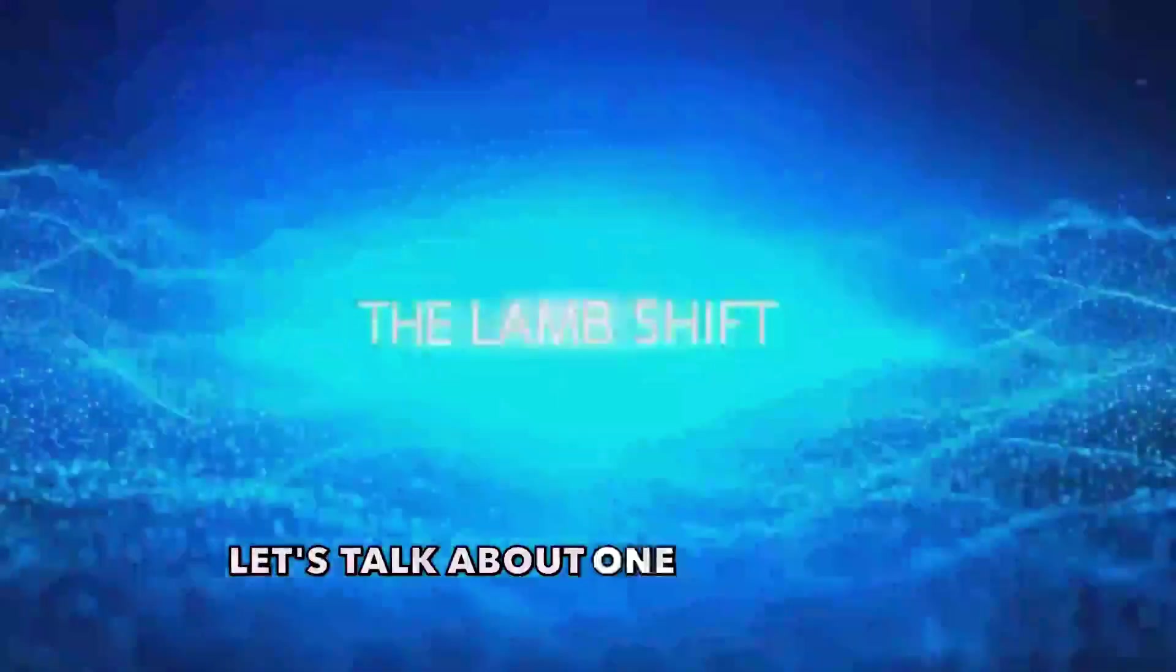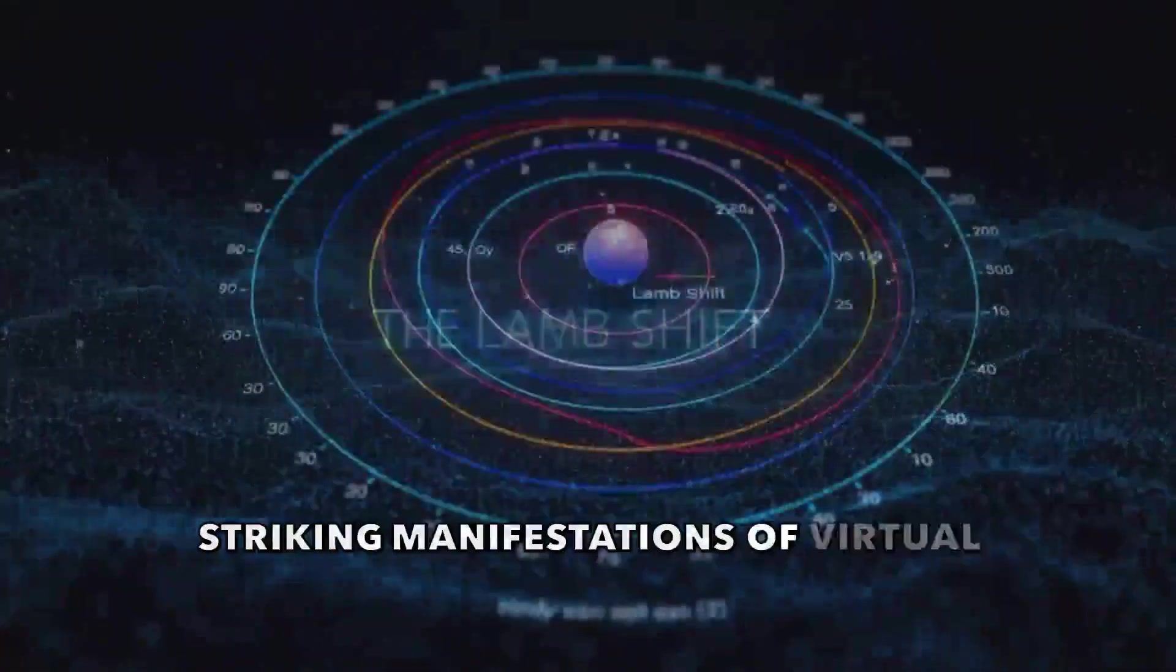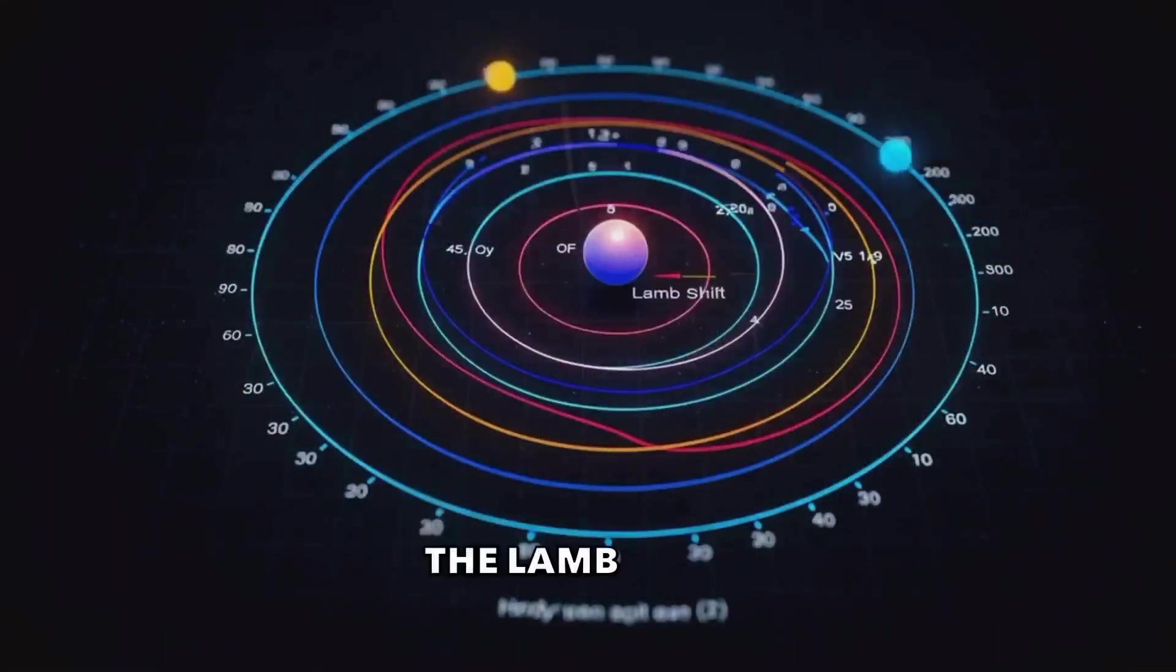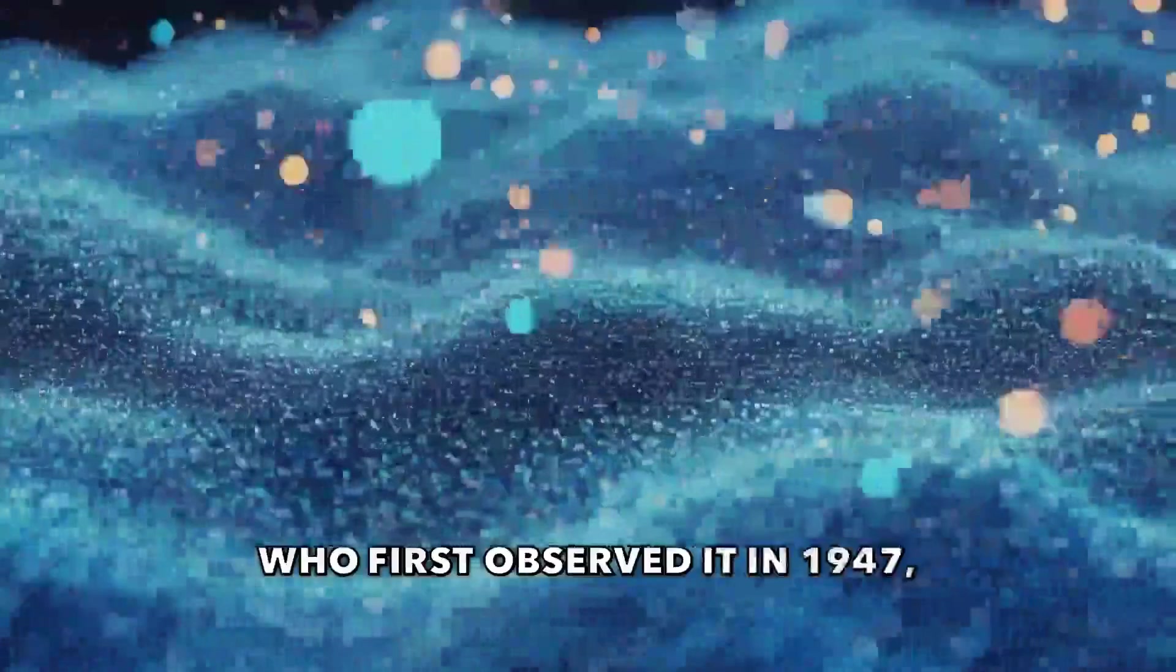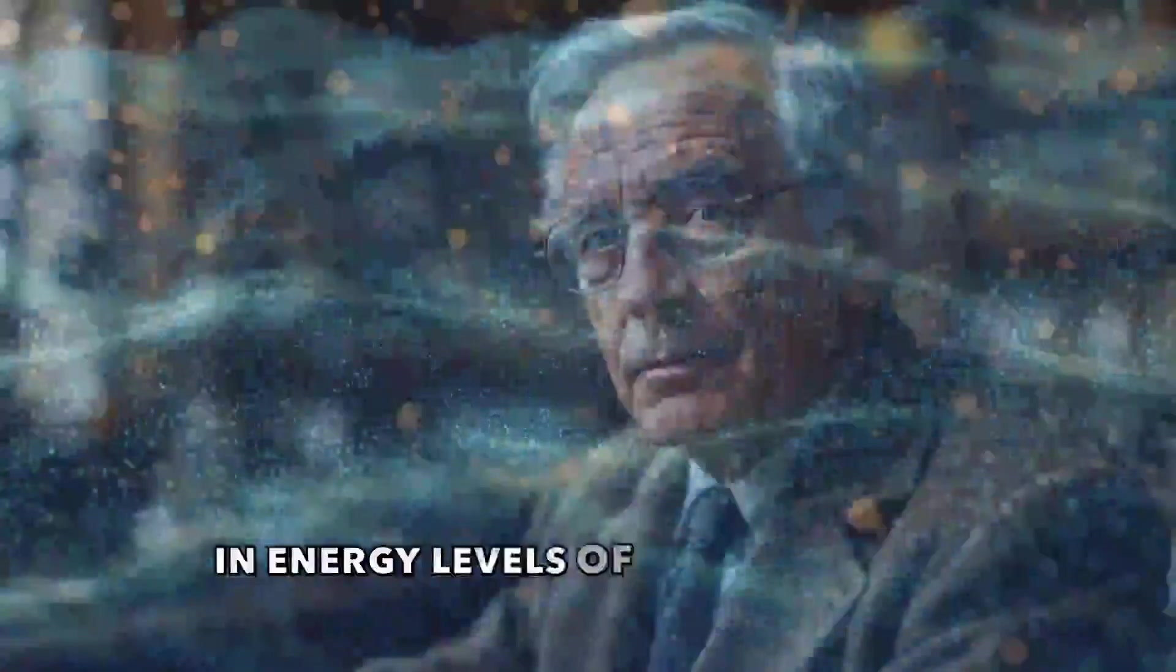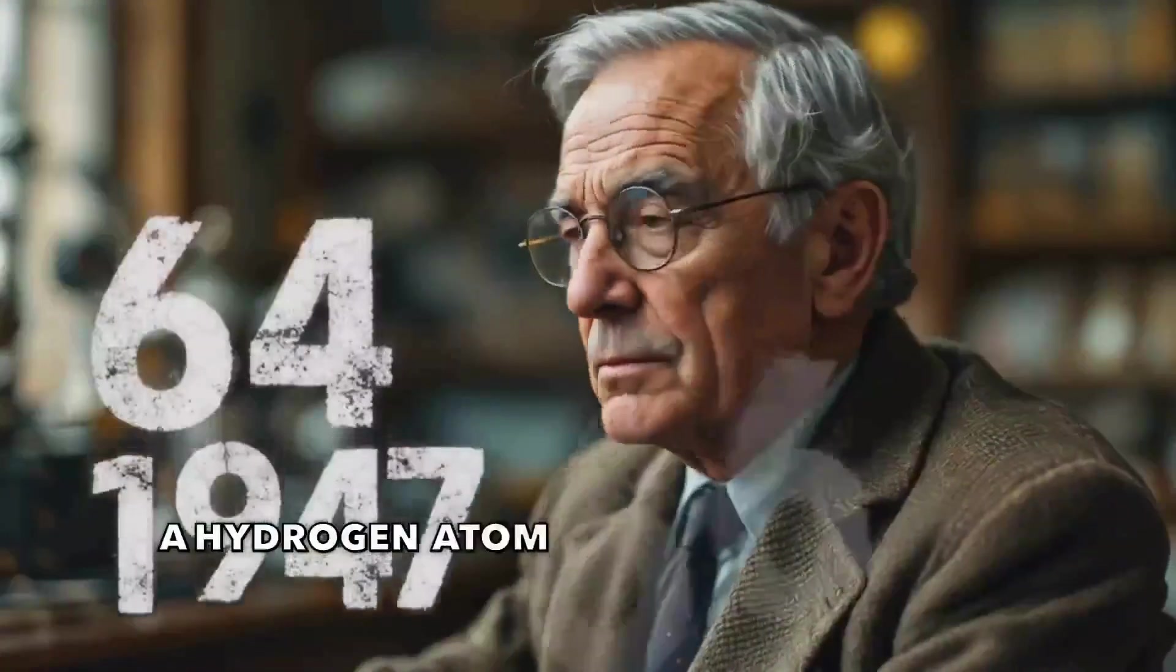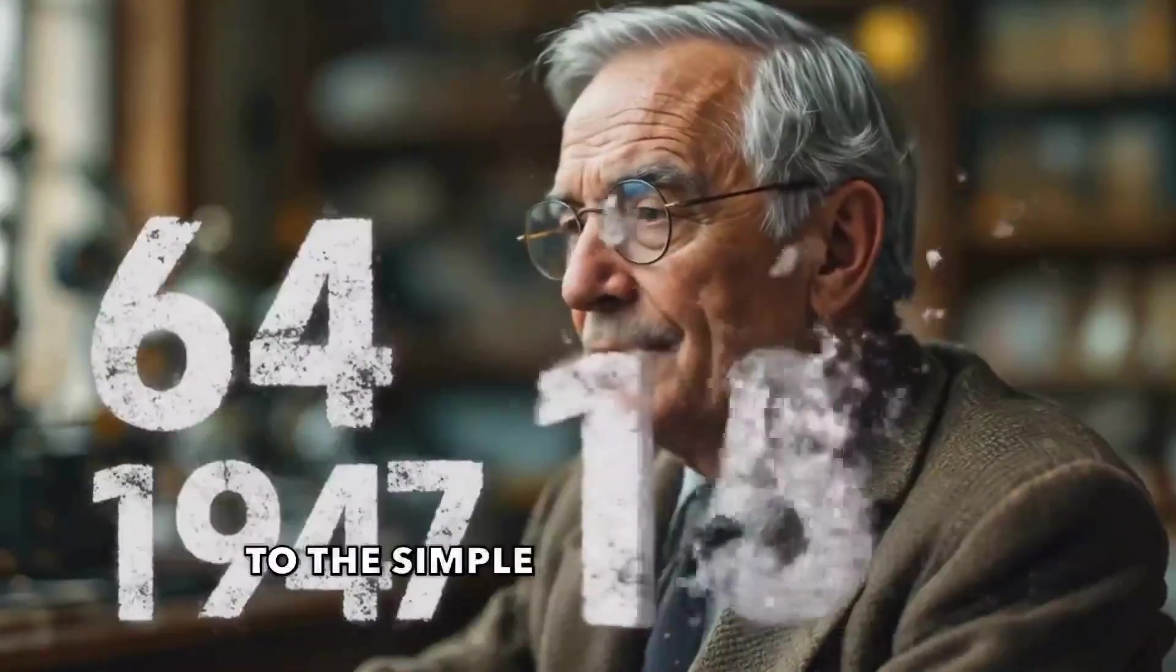Let's talk about one of the most striking manifestations of virtual particles, the Lamb shift. Named after Willis Lamb, who first observed it in 1947, the Lamb shift is a small difference in energy levels of an electron in a hydrogen atom that shouldn't exist according to the simple quantum theory.